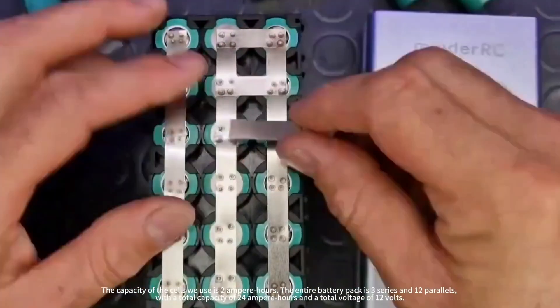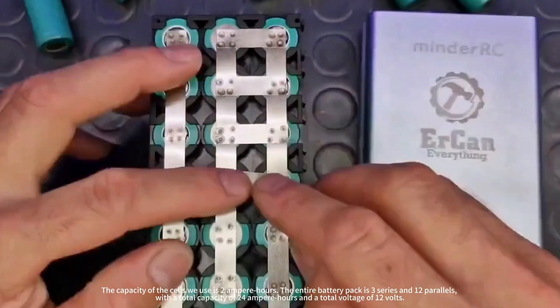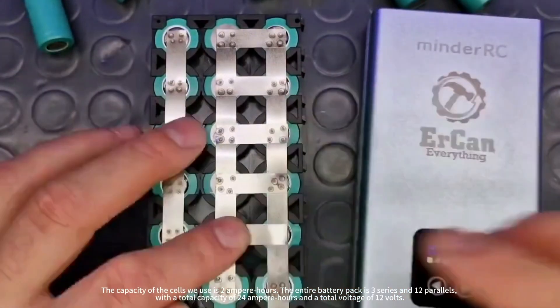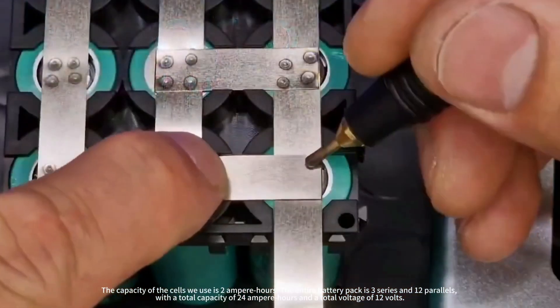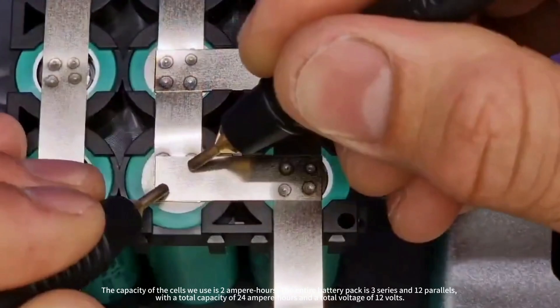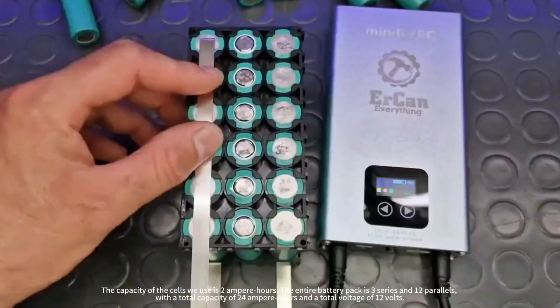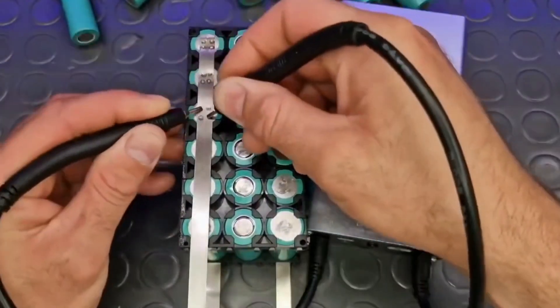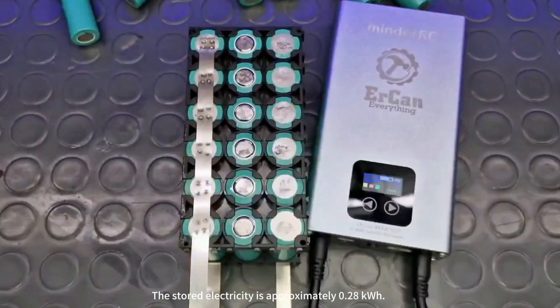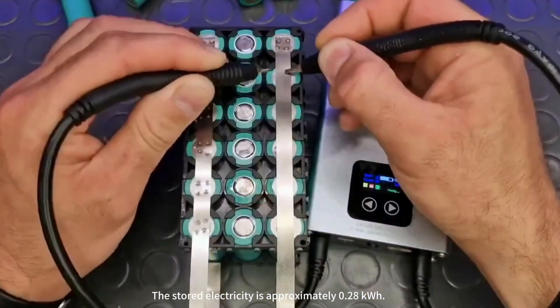The capacity of the cells we use is 2 ampere-hours. The entire battery pack is three series and 12 parallels, with a total capacity of 24 ampere-hours and a total voltage of 12 volts. The stored electricity is approximately 0.28 kilowatt-hours.